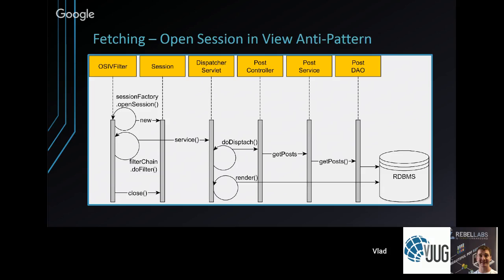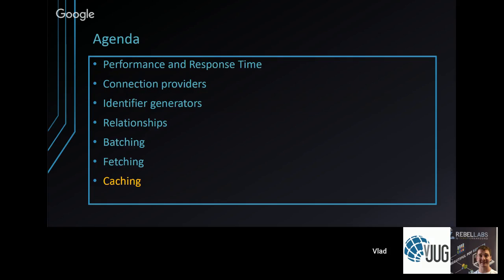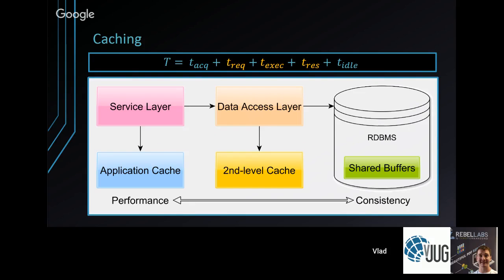Even worse is the temporary session anti-pattern, enabled with one configuration property. Hibernate then works like EclipseLink — no LazyInitializationException, but every lazily fetched association opens a new session, requires a new connection, and operates in auto-commit mode. Just because something is convenient doesn't mean you should use it.